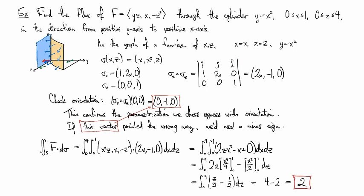And again, if we ended up picking a parametrization that gave us the vector sticking out the wrong side to agree with the assigned orientation, then we would just throw like a minus sign in at the end. But we don't need to do it because it works here.